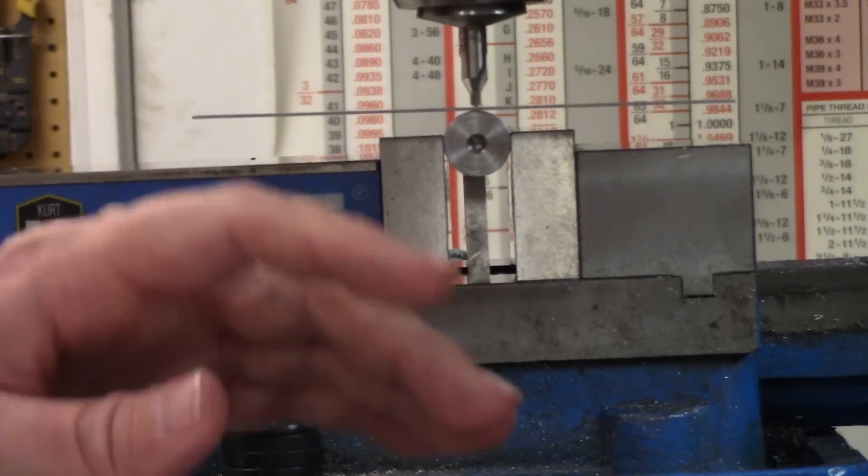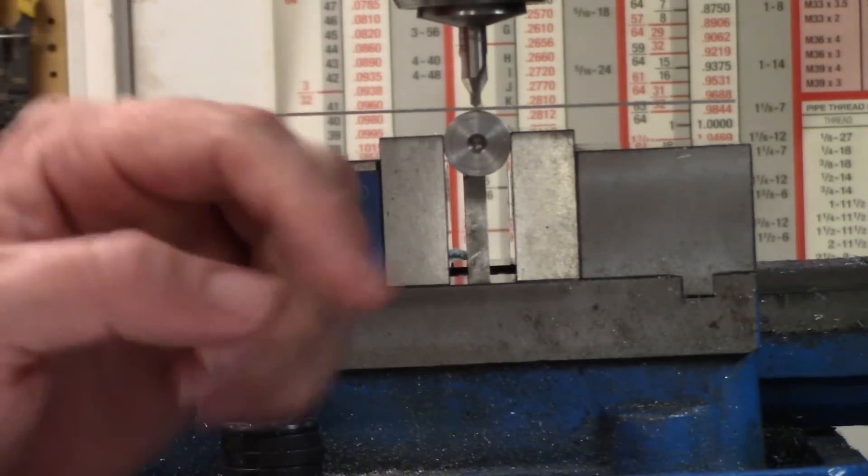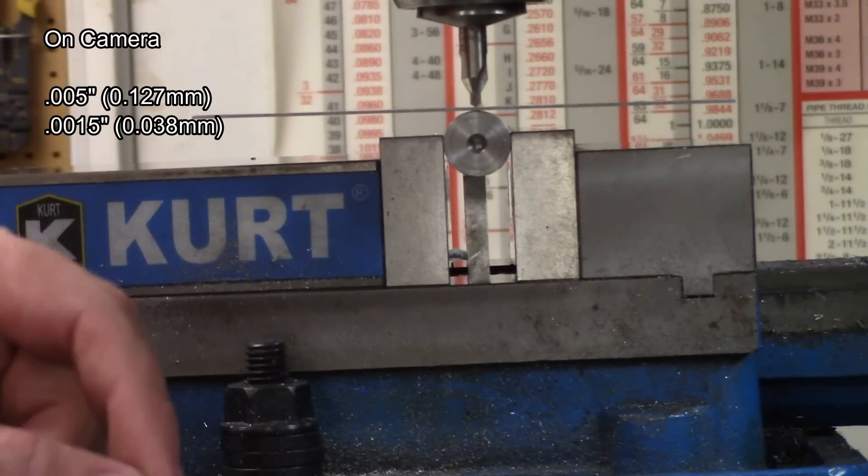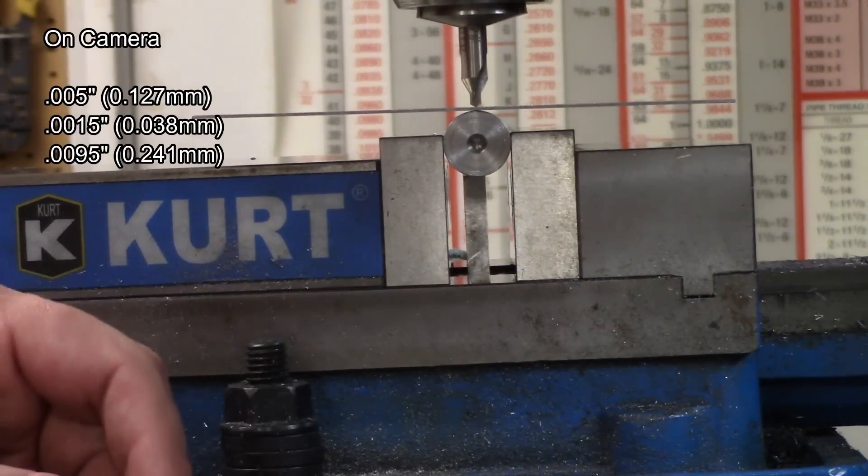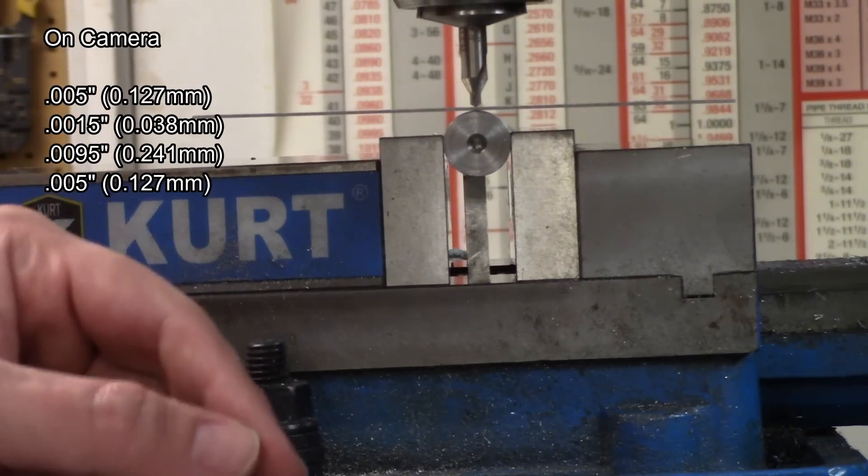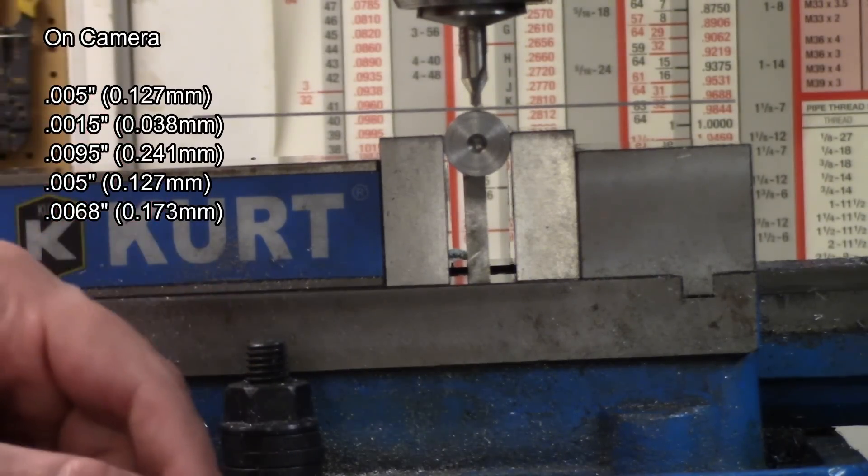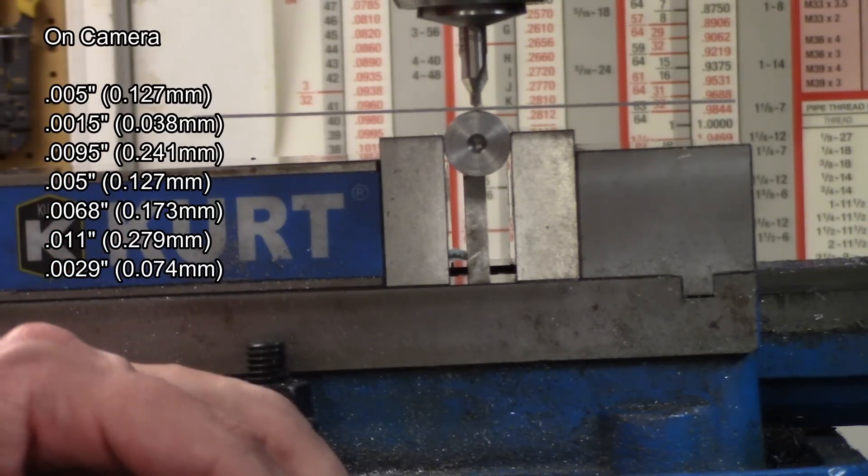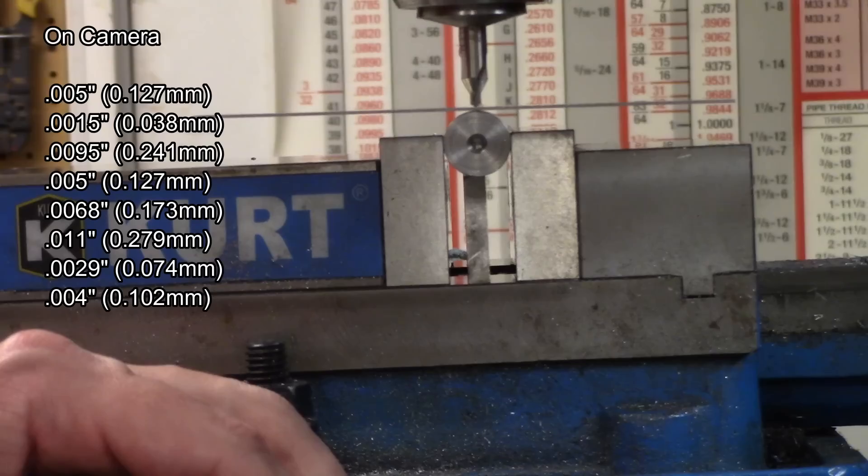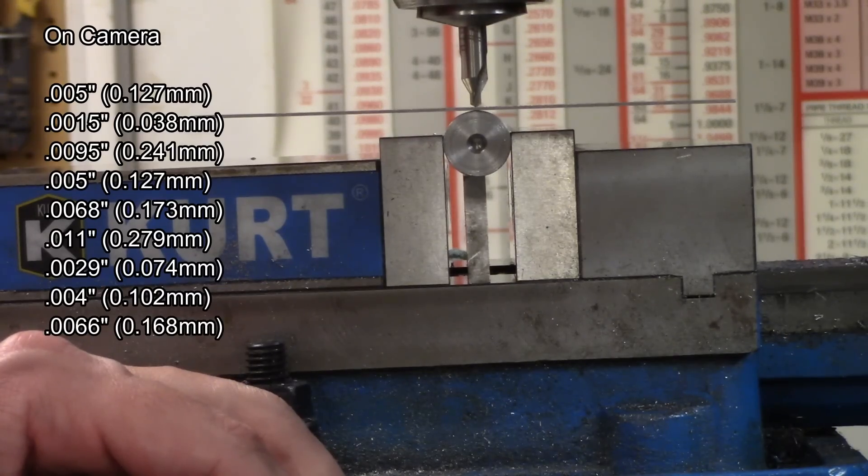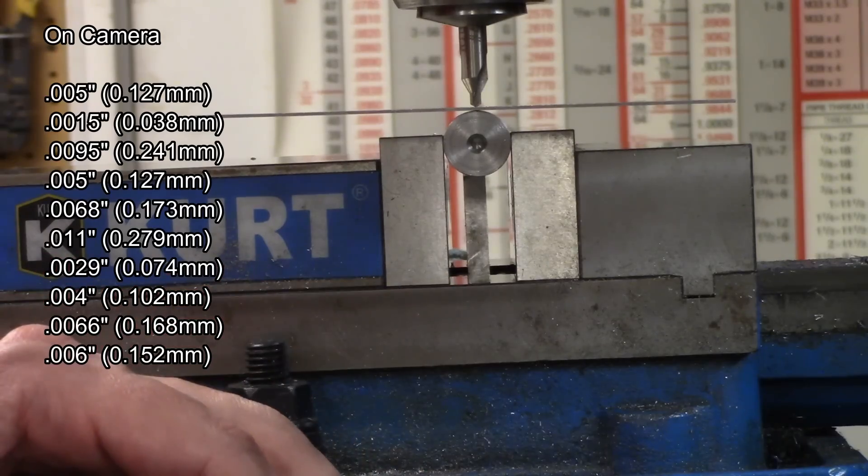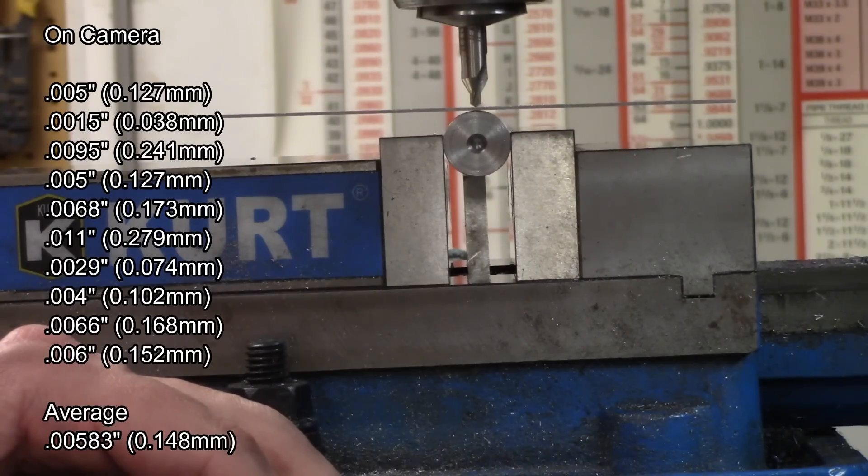And we're back. To give a recap, the readings for on camera were .005, .0015, .0095, .005, .0068, .011, .0029, .004, .0066, and .006. I averaged that out and that comes to an average deviation of .00583.